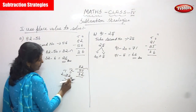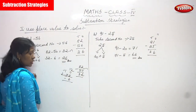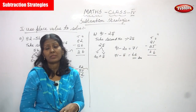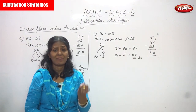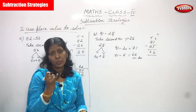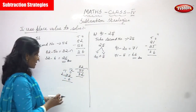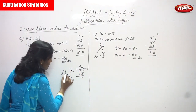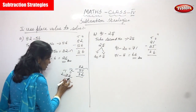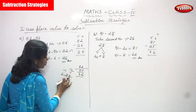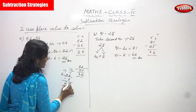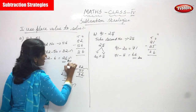From 12 subtract 6 using backward counting: after 6, count 7, 8, 9, 10, 11, 12 — that is 6. Write 6 here. In the 10's place there is no number, so consider 0 and bring down the 2 as it is. The answer is 26.